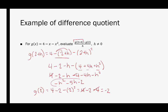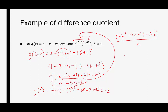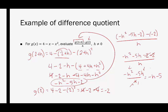So we substitute these in: negative h squared minus 5h minus 2, minus negative 2, all over h. Cleaning this up, we get negative h squared minus 5h minus 2, and the minus negative 2 becomes plus 2, all over h — those end up canceling, leaving negative h squared minus 5h divided by h. All three terms have a factor of h, so dividing out the common factor leaves us with negative h minus 5 as our difference quotient for this quadratic function.